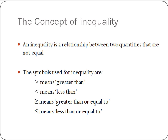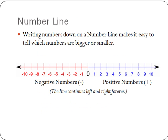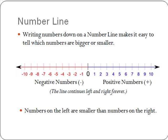The symbols we use are: greater than, less than, greater than or equal to, or less than or equal to. Often when dealing with inequalities, we will be asked to represent the solutions on a number line. Writing numbers on a number line makes it easy to tell which numbers are bigger or smaller. On a number line, we always put negative numbers on the left and positive numbers on the right. Numbers on the left are smaller than numbers on the right.